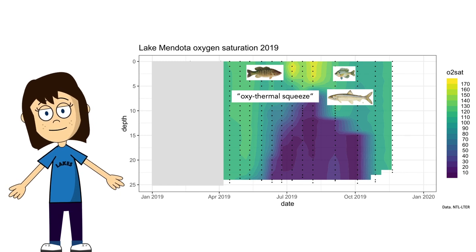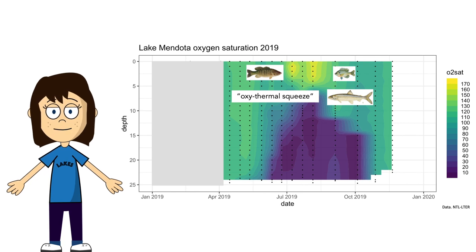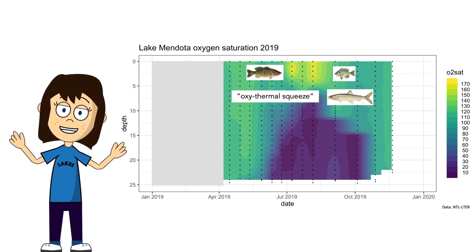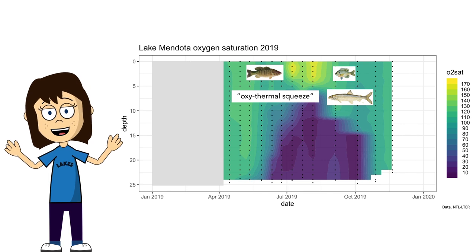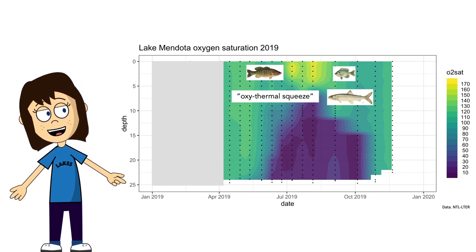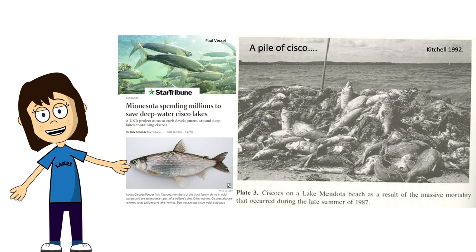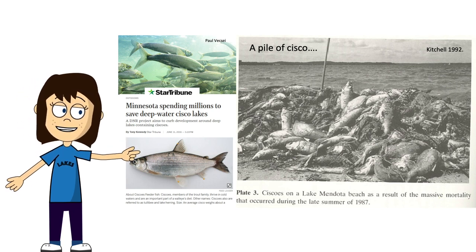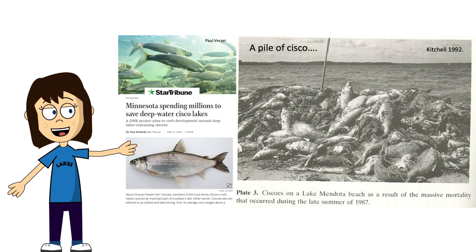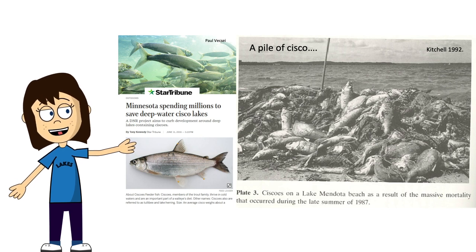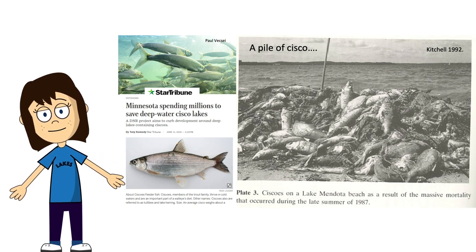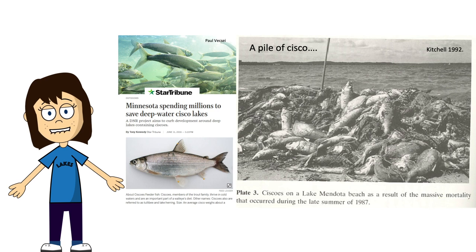The problem with oxygen depletion is that it limits the habitat available for fish. Fish need oxygen to breathe, and a lot of fish love cold water and want to be in the bottom of the lake. But if there's no oxygen at the bottom, those fish are forced to be at the surface in warm water habitat. We actually call this the oxythermal squeeze — where there's no good cold water habitat left for some fish species. We're seeing declines in cold water fish species in many Wisconsin lakes. Here's a picture of a pile of dead cisco on a Lake Mendota beach in the summer of 1987 — these fish thrive in cold water, and if the cold water has no oxygen, they're going to die.